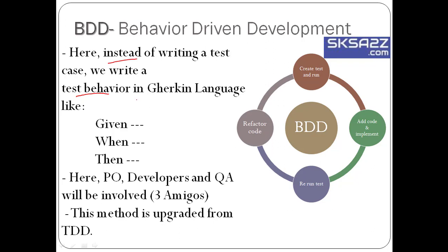In BDD, test scenarios are written in Gherkin language — a plain English language — using the format: given, when, and then. In BDD, the product owner, developers, and QA are all involved; this is called the 3 amigos. BDD is an upgrade from TDD, created by seeing the flaws in TDD, because TDD test cases are not understandable by product owners or QA — only developers understand them. So the concept of BDD was introduced, where test behaviors are written in Gherkin, which is plain English that everyone can understand.